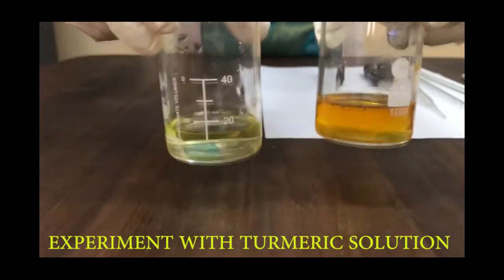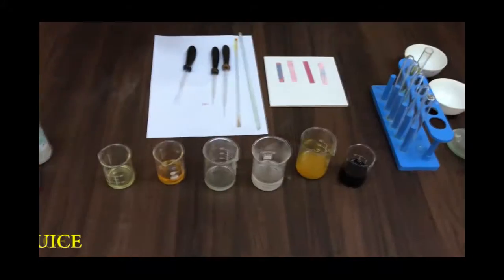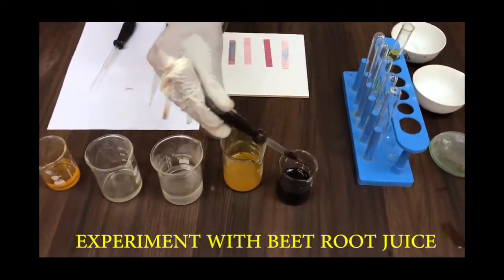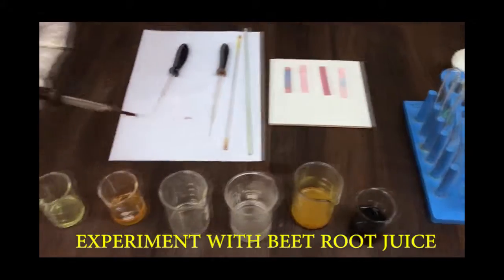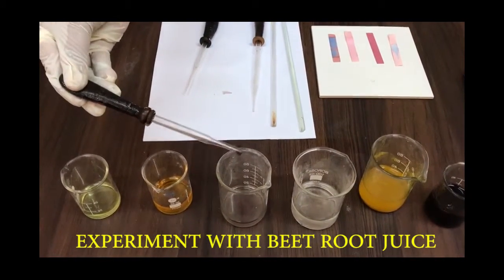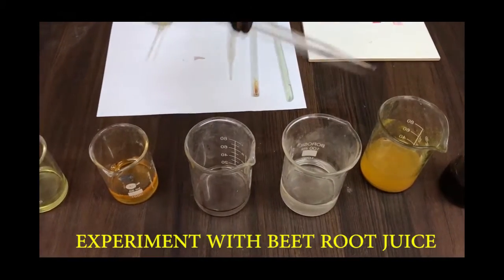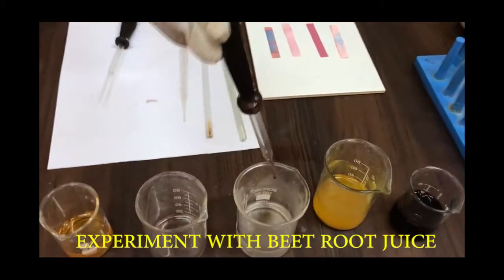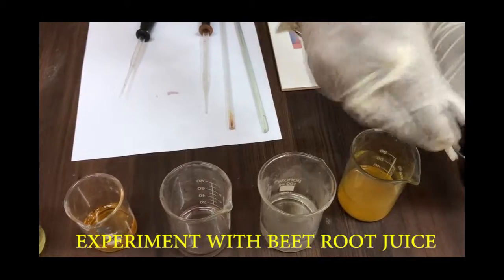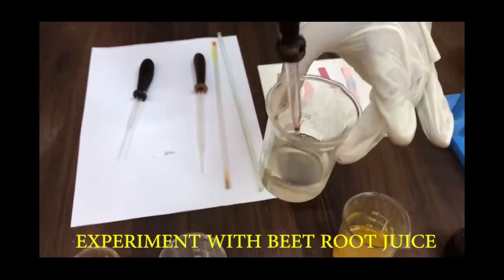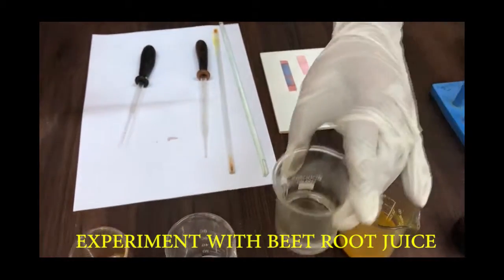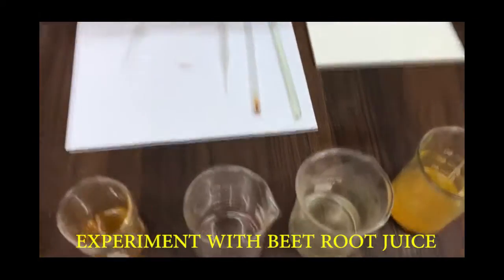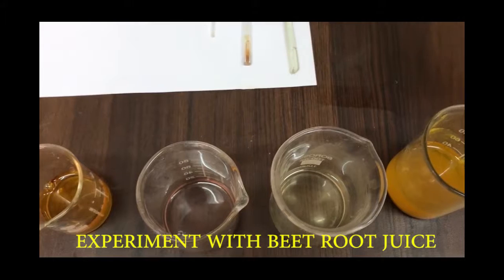Now let's take another natural indicator, beetroot juice. Add a few drops of beetroot juice to both the samples. Now let's see the color change. In the first sample, the color changes to pink, indicating the presence of an acid.